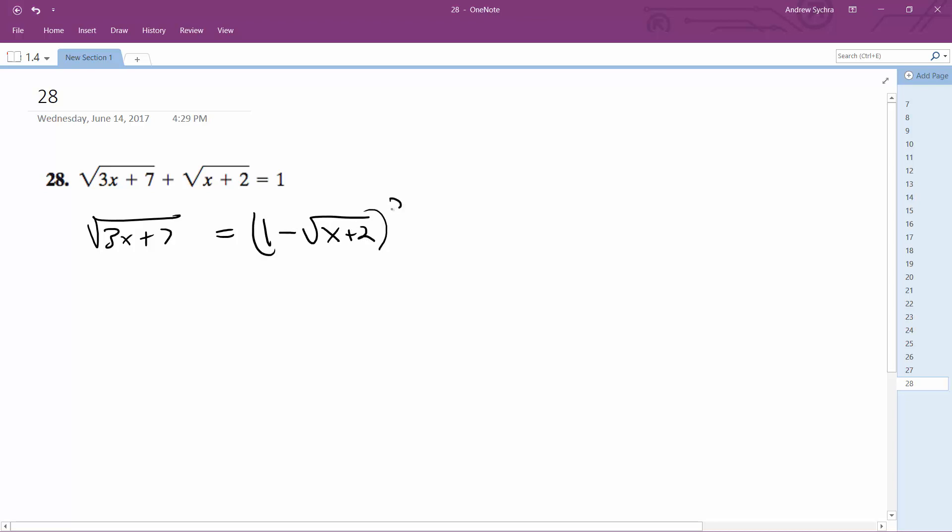Square both sides, and I'm going to end up with 3x plus 7 is equal to 1 minus 2 root x plus 2 plus x plus 2, because squaring gets rid of the radical.